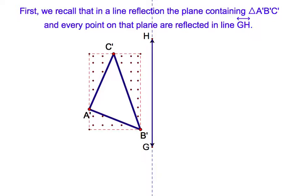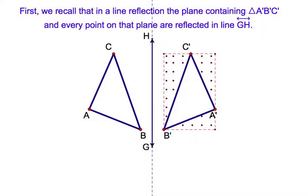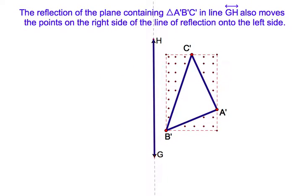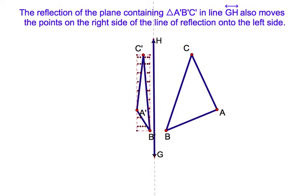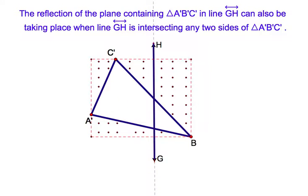First, we recall that in a line reflection, the plane containing triangle A'B'C' and every point on that plane are reflected in line GH. The reflection moves the points on the right side of the line of reflection onto the left side. This can also take place when line GH is intersecting any two sides of triangle A'B'C'.